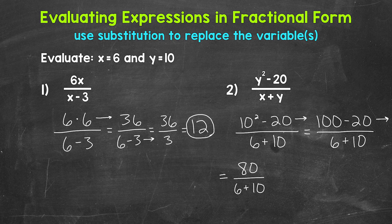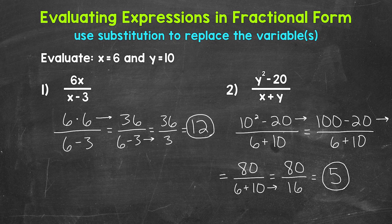Now we can work through the bottom. So we have addition. This is going to equal 80 over 6 plus 10 equals 16. So now we have 80 over 16, or 80 divided by 16. That equals 5. The value of this expression is 5 when x equals 6 and y equals 10.